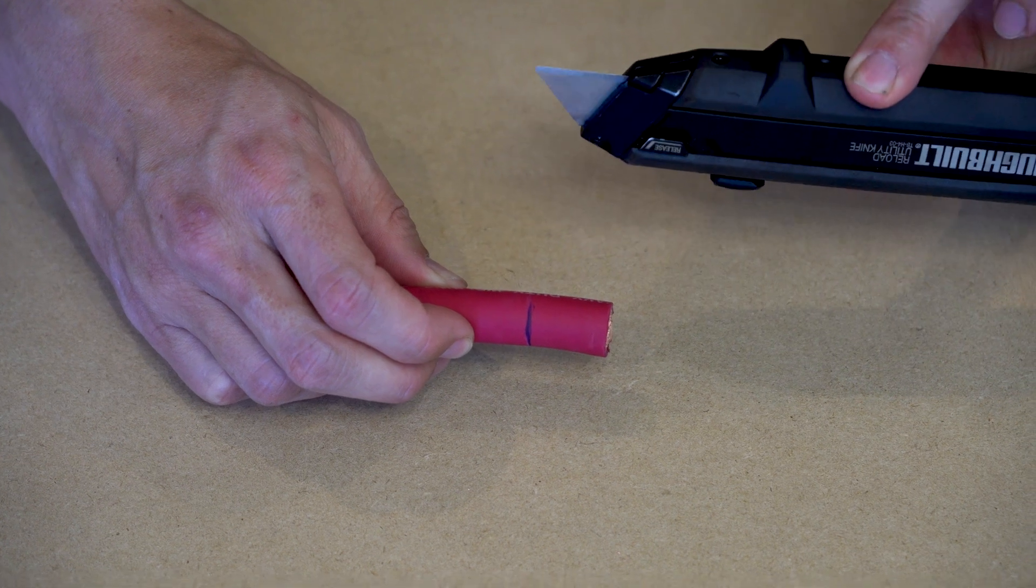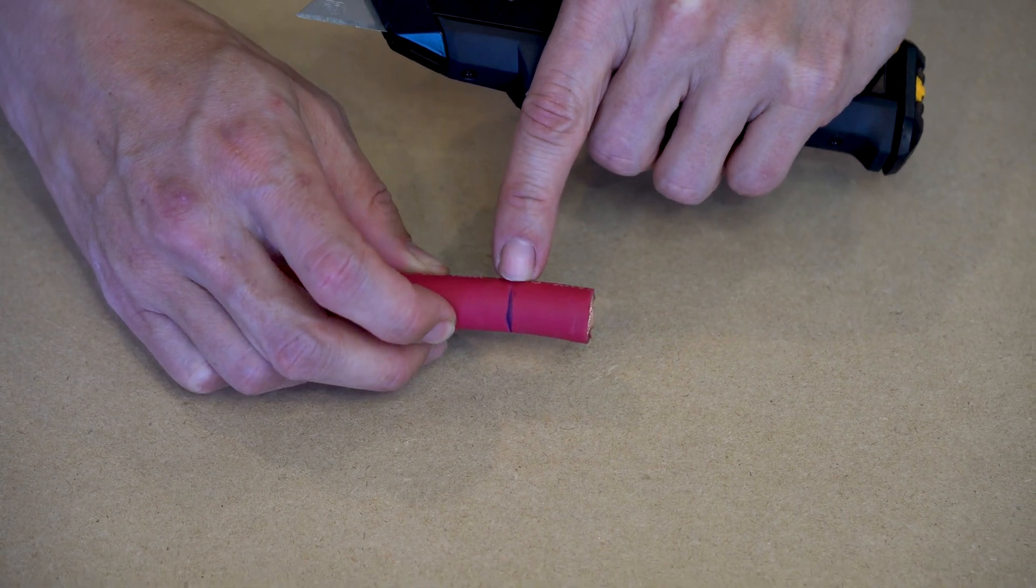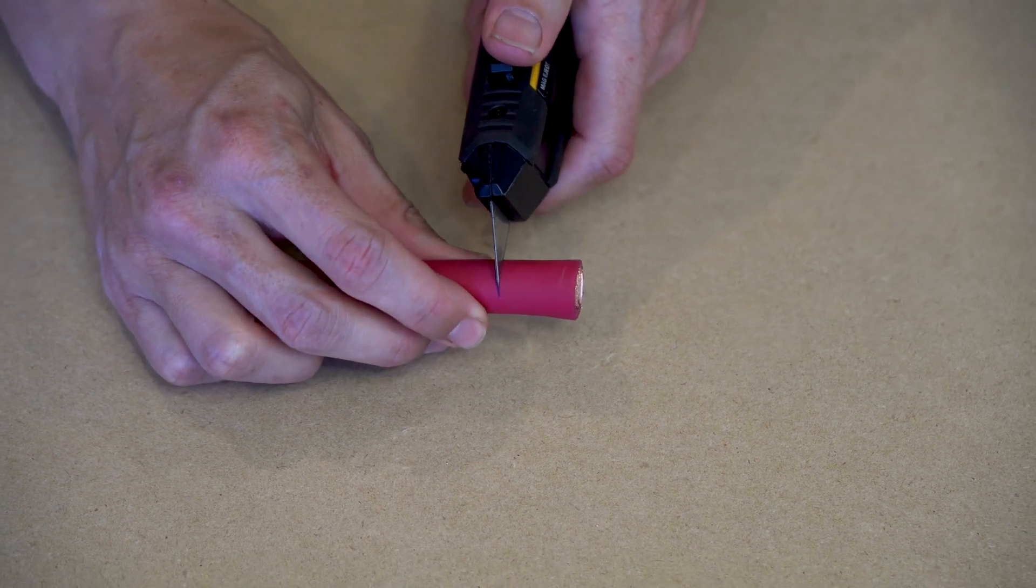Then, with a box cutter, we carefully cut in a circular motion around the jacket. Be sure not to apply too much pressure so that you don't accidentally cut through some of the copper conductors.